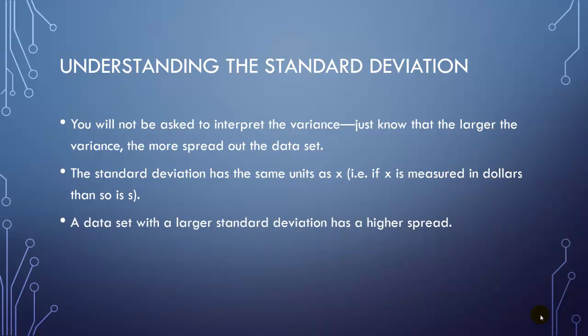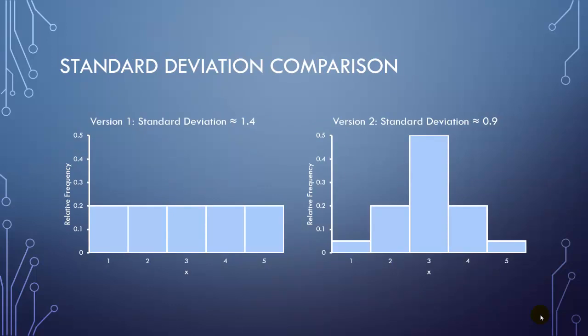But similarly, a data set with a larger standard deviation would also have a higher spread. We're going to do a little bit better than that, of course. But just to demonstrate this concept, looking at our version one distribution, the standard deviation was 1.4 for it. But the standard deviation for version two was only 0.9. So as we predicted, the spread should actually be smaller for that second distribution, since the values were more consistent.